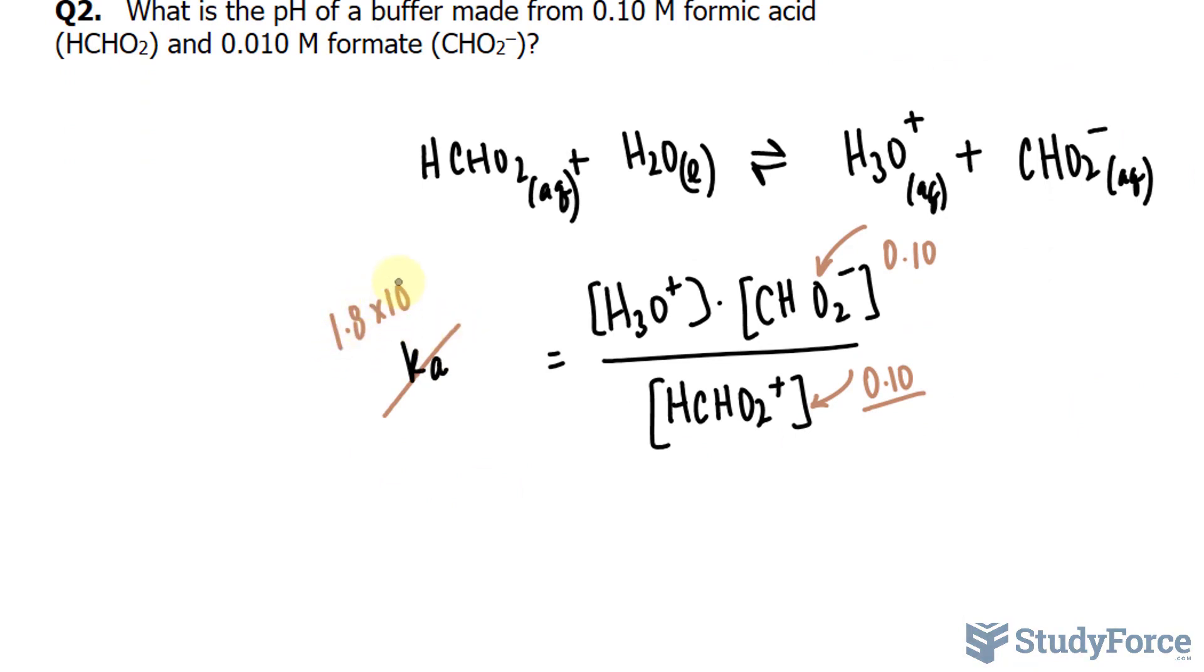We are looking for the concentration of H3O, hydronium, because by finding its concentration, we can plug it into the formula pH is equal to negative log of the concentration of H3O+, and we can find the pH.